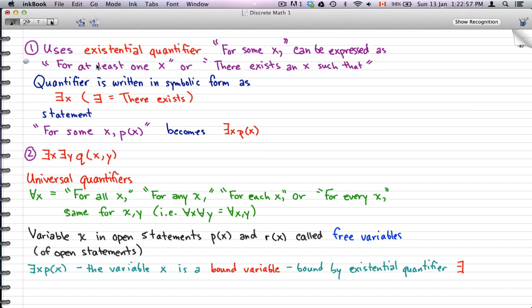Now, universal quantifiers are something different than existential quantifiers. What you have to remember here is an upside-down A with x. This signifies 'for all x,' 'for any x,' 'for each x,' or 'for every x.'